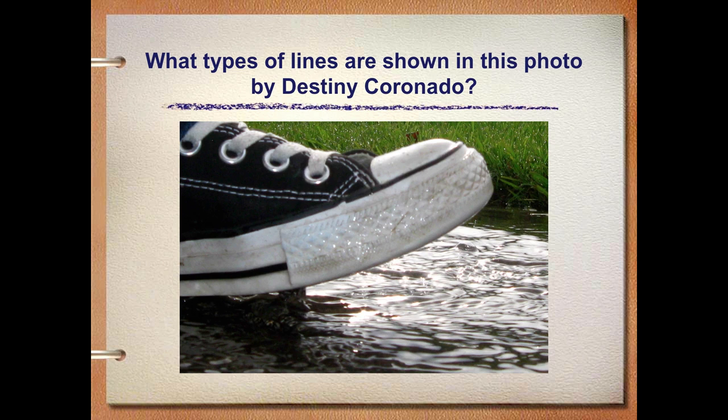What types of lines are shown in this photo by Destiny Coronado? We can see curved lines from the edge of the shoe. We can see zigzag lines from the tread at the front of the shoe. We can actually see dashed lines in the stitching.